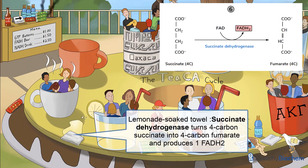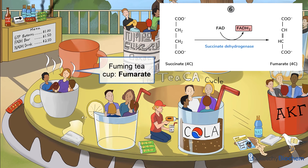You'll see another wet towel on the floor next to the group soaked with succinate. This towel is succinate dehydrogenase. In step 6, succinate dehydrogenase turns 4-carbon succinate into 4-carbon fumarate. We've got another foursome of riders sitting in a fuming teacup. This step produces our first and only FADH2, short for Flavin Adenine Dinucleotide, which comes from Riboflavin. You'll encounter an FADH energy bar nearby, costing $1.50, which coincidentally provides 1.5 ATP during the electron transport chain and oxidative phosphorylation.